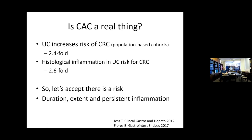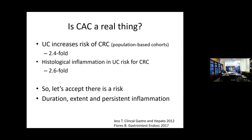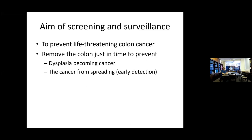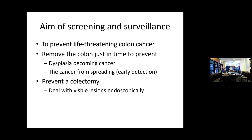So let's accept there is a risk, and we can see that it's related to duration, the extent of the colitis, and if you have persistent uncontrolled inflammation. What is the aim of screening and surveillance of patients with UC? It's to prevent life-threatening colon cancer, or to remove the colon just in time to prevent dysplasia from becoming cancer, or if you find a cancer, to catch it early. But also to prevent colectomy in patients who don't necessarily need one, and to deal with visible lesions endoscopically.